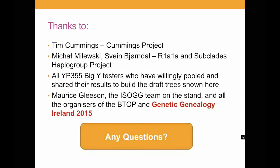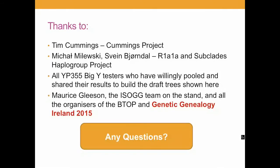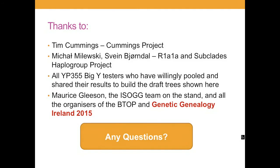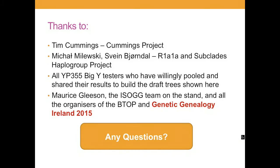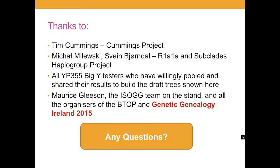One thing: if FamilyTreeDNA do improve the read lengths, it will be the STRs that will improve. Hopefully soon. When does the cost go to fall? There are sales every year — most people who've ordered the Big Y have probably done it on a sale. There's one happening right now, and usually one at Christmas as well — $100 off the Big Y at the show, which brings it down from $575 to $475. I'm waiting for the day when it actually comes down to $100.